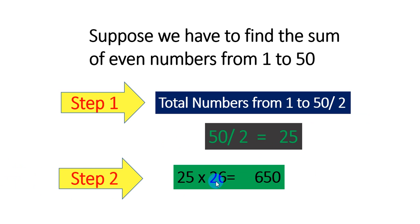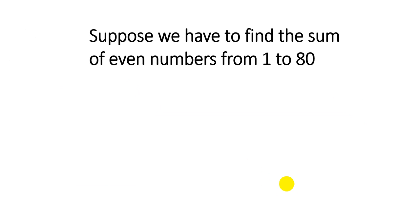So dividing 50 by 2 we get 25. In the second step we take this 25 and the next number is 26. We take the product of these two numbers and we get 650. Therefore the sum of the even numbers from 1 to 50 is 650. Take one more example.